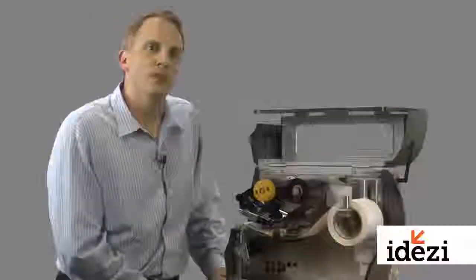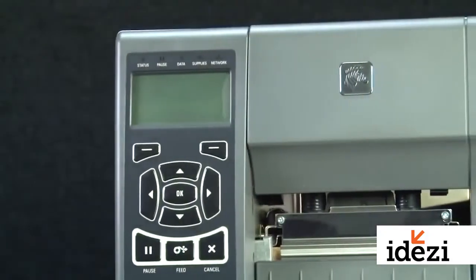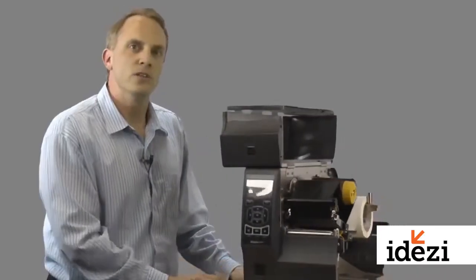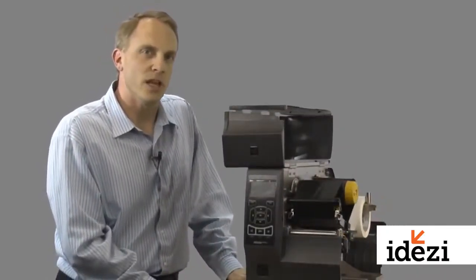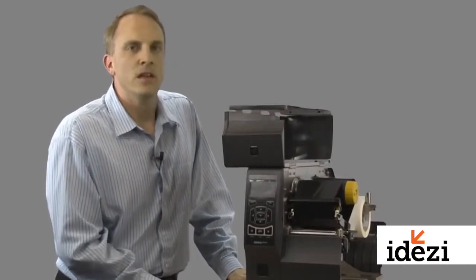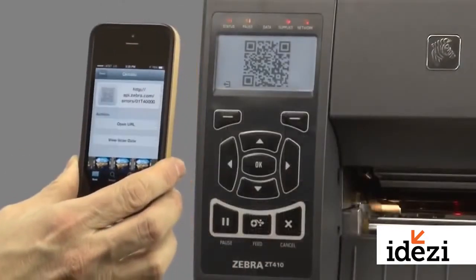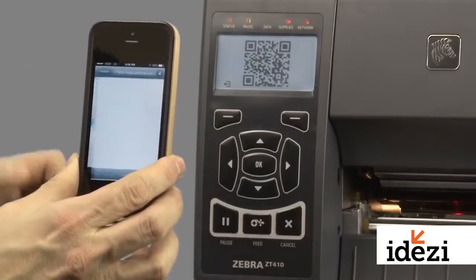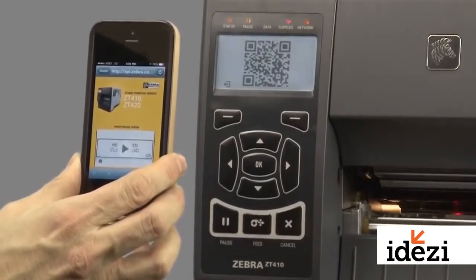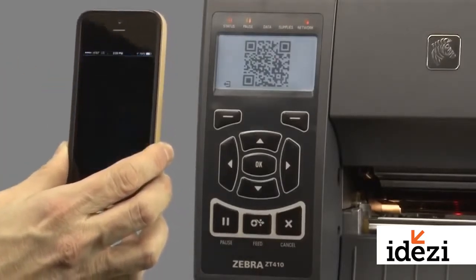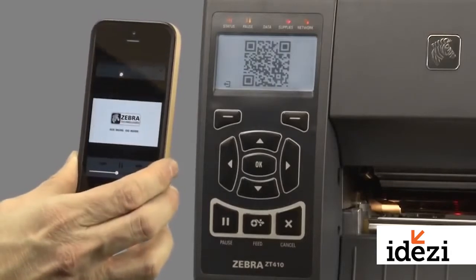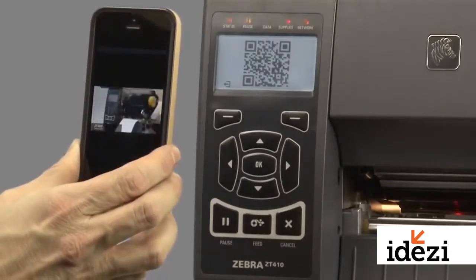The ZT400 boasts a new intuitive user interface, including a sealed keypad for easy cleaning and easy to interpret status indicators. Dynamic QR codes are assigned to the printer error states, which enable the user to access direct web content, including videos and tech support documentation via scanning with a typical QR code application on your smart device.